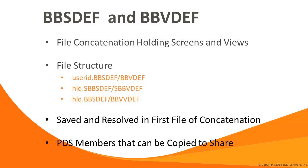The allocation of user-level libraries is determined during product customization. Until they allocate their user-level libraries, users will be prompted to do so each time they start a MainView session. Views and screens are displayed from the first hit in the concatenation. To share customized views and screens, you can copy the PDS members in the BBV def and BBS def files.